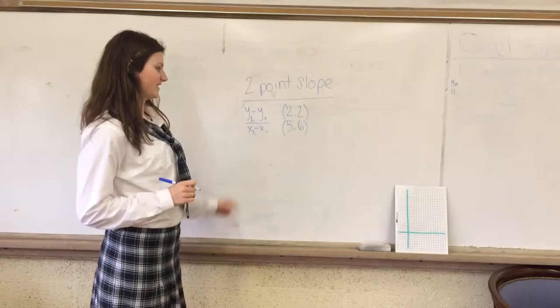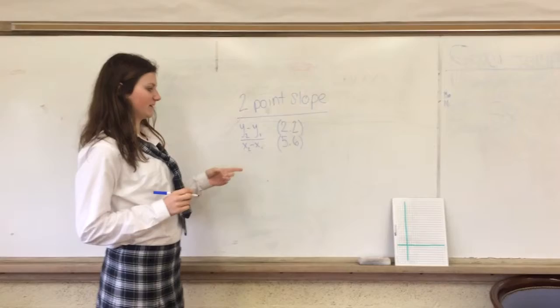Okay, so we're going to be doing two-point slope, and the equation for that is y sub 2 minus y sub 1 over x sub 2 minus x sub 1.